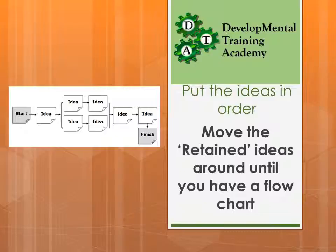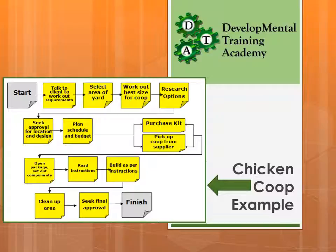You'll notice that this one has some ideas that are actually occurring at the same time. Looking at our chicken coop, we've got all of our ideas in order. We'll start with talking to our client to work out the requirements, perhaps our kids, select the area of the yard, work out the size, and so on through to purchasing and picking up our chicken coop from the supplier, setting it out, reading the instructions, building it, cleaning up the area, and then getting final approval from the client.